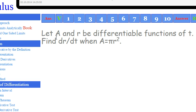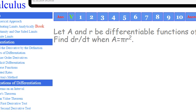Okay, we have let A and r be differentiable functions of t. We want to find dr/dt when A equals pi r squared. Simple as that. Let's move on into the classroom.